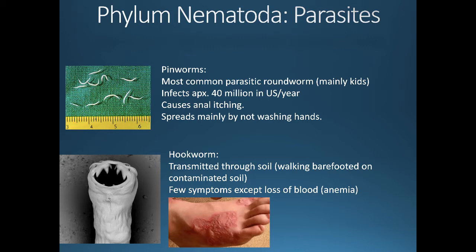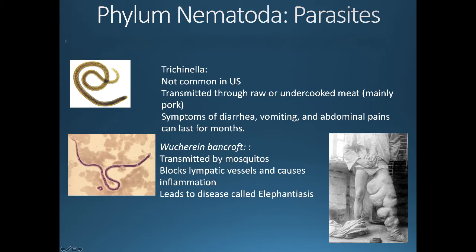Hookworm is most often transmitted through soil — walking barefoot on contaminated soil allows the hookworm, visible in this electron micrograph showing the hooks it's named for, to bind to your skin and penetrate it. Infections commonly appear in the feet and are fairly easily treated if caught early. Trichinella, shown in the upper left, is transmitted through raw or undercooked meat, usually pork, and can cause diarrhea, vomiting, and abdominal pains lasting months even after treatment.